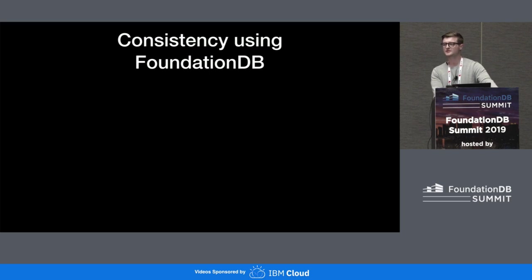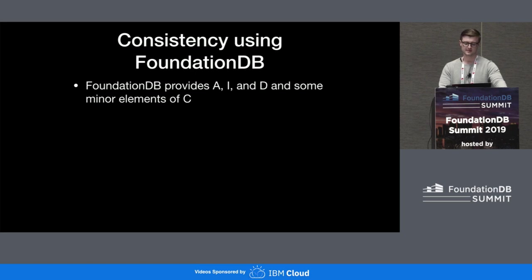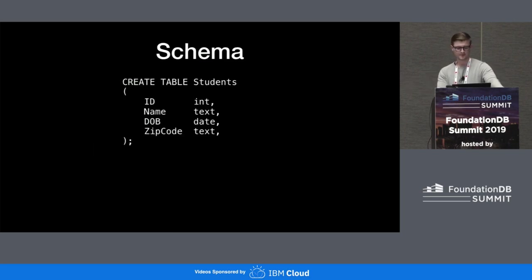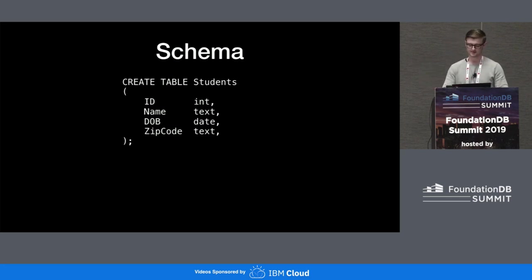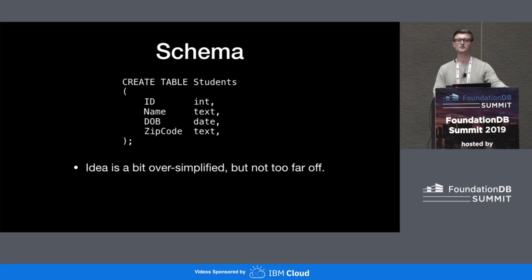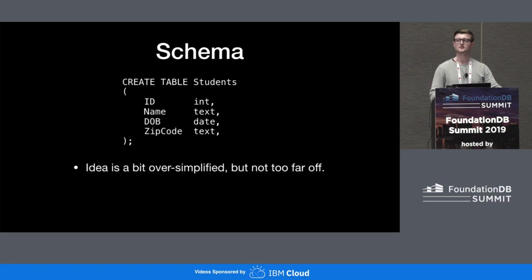So how do you create consistency? Remember, this is consistency in the ACID sense, not in the CAP theorem sense. You're provided with A, I, and D, and C is your layer's responsibility. In the example today, we're going to talk about a simple SQL-like schema — it's not about any particular database, just a logical model. It's a bit oversimplified, but not too far off, and I think the record layer talks gave you a lot of information about how to productionize that type of thing.